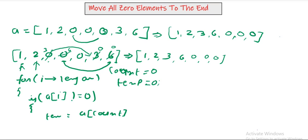If it is not 0, then I will take the temporary variable and swap the elements: a of count equals to a of i, and a of i equals to temp.